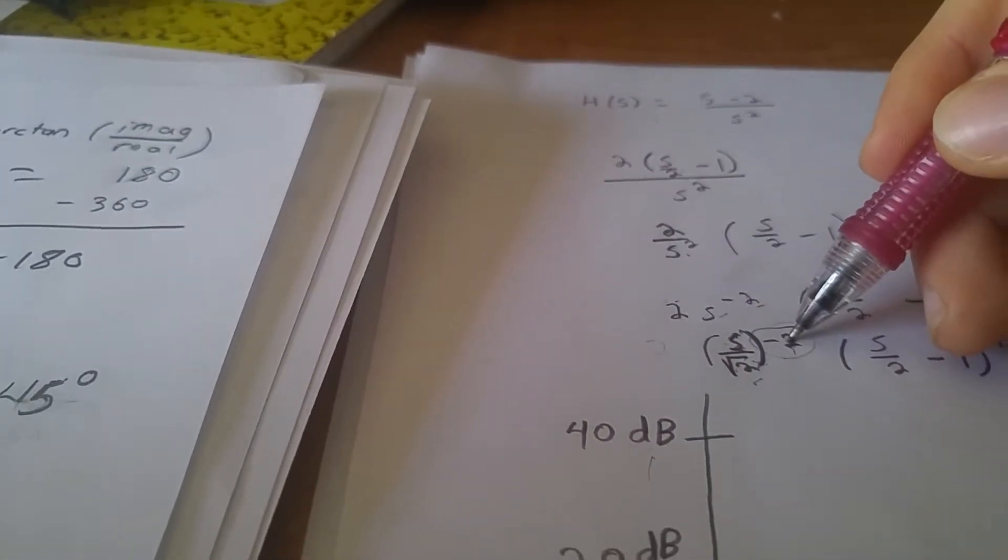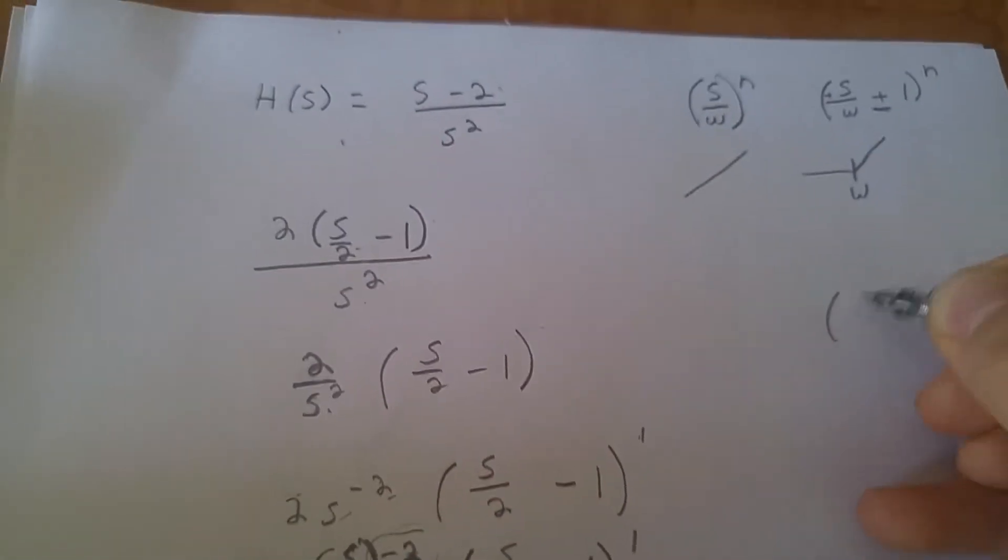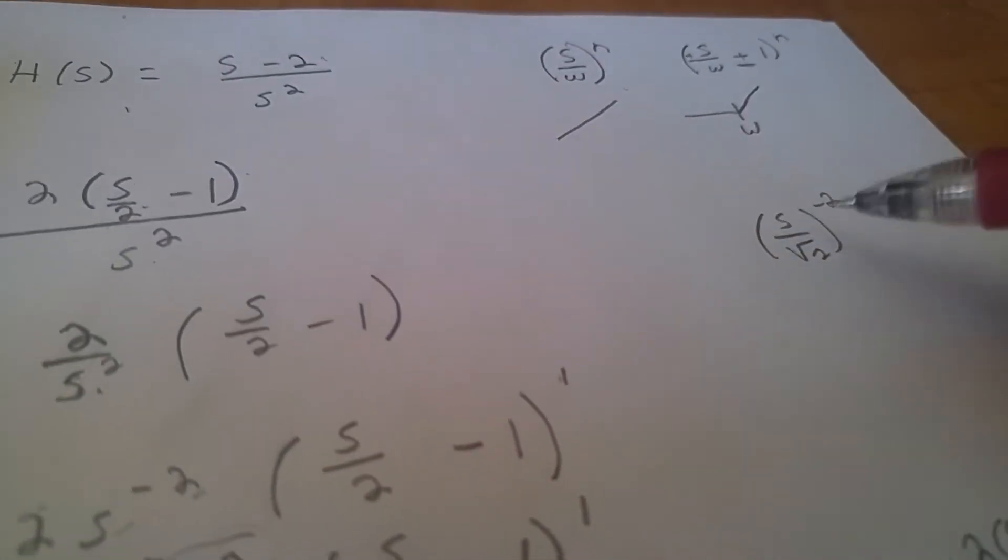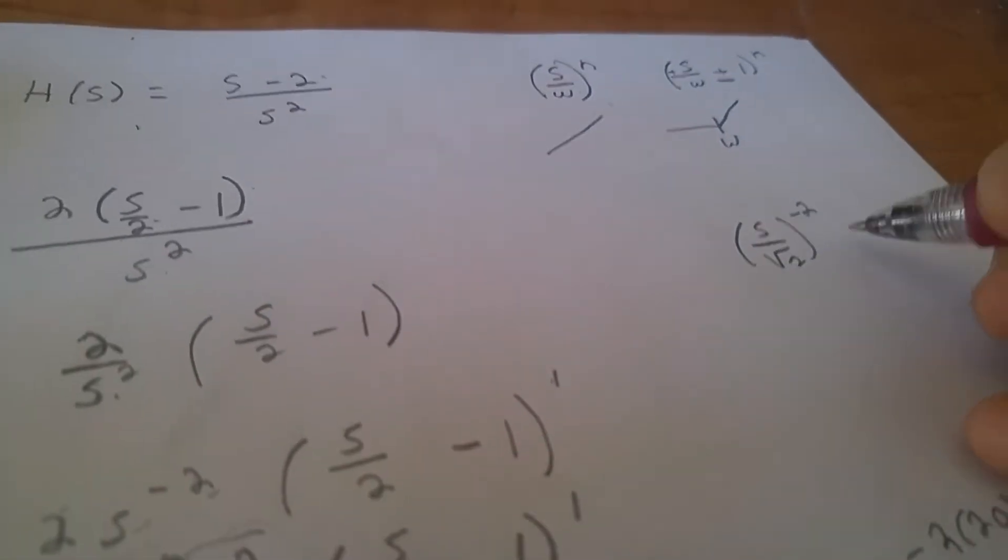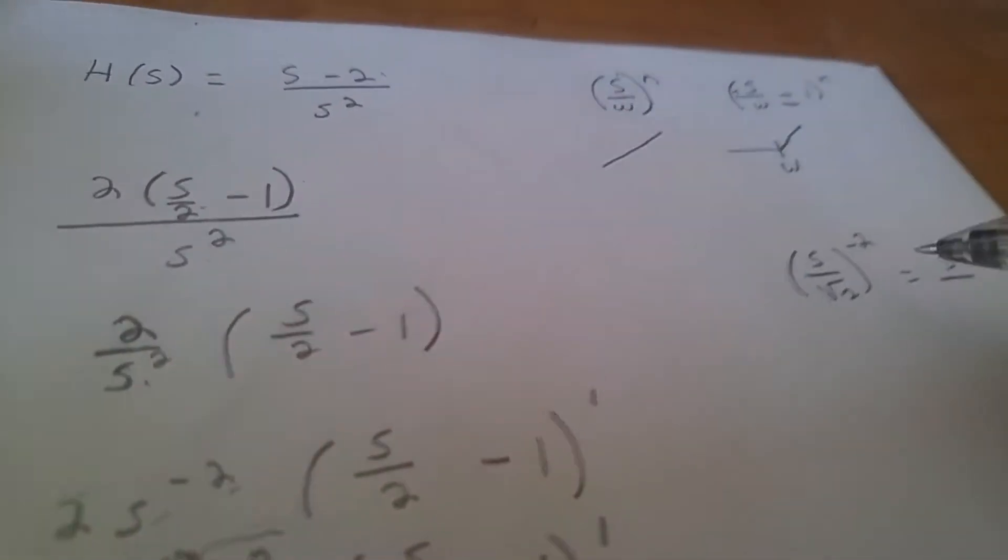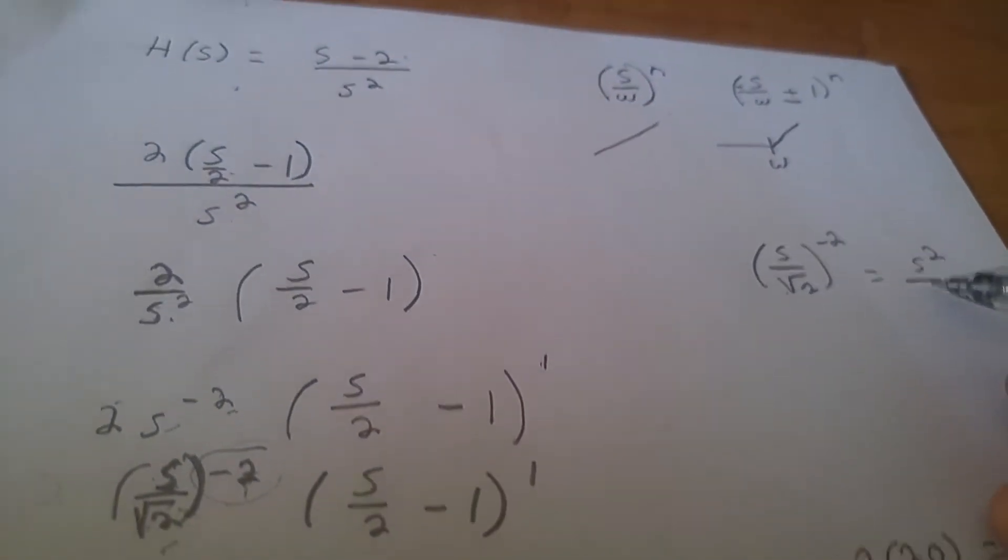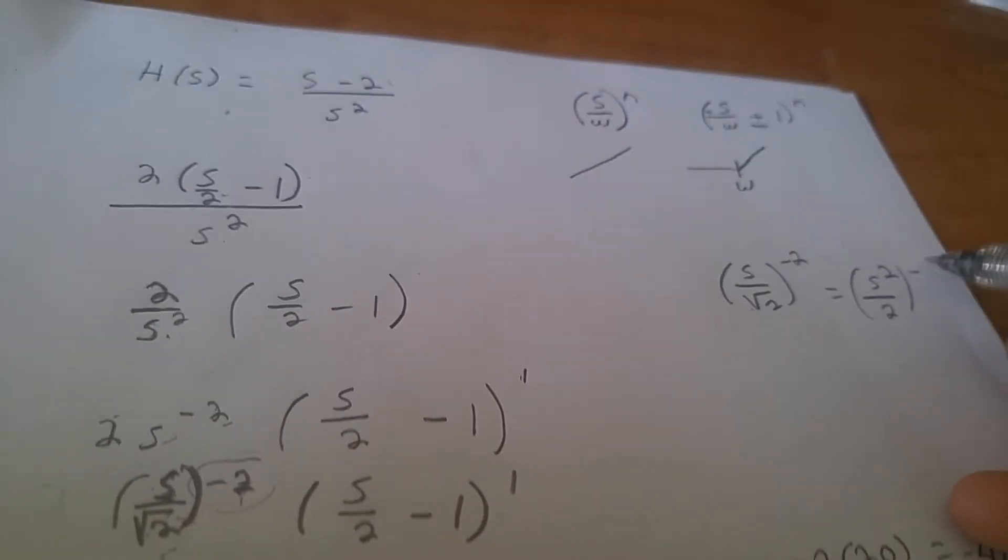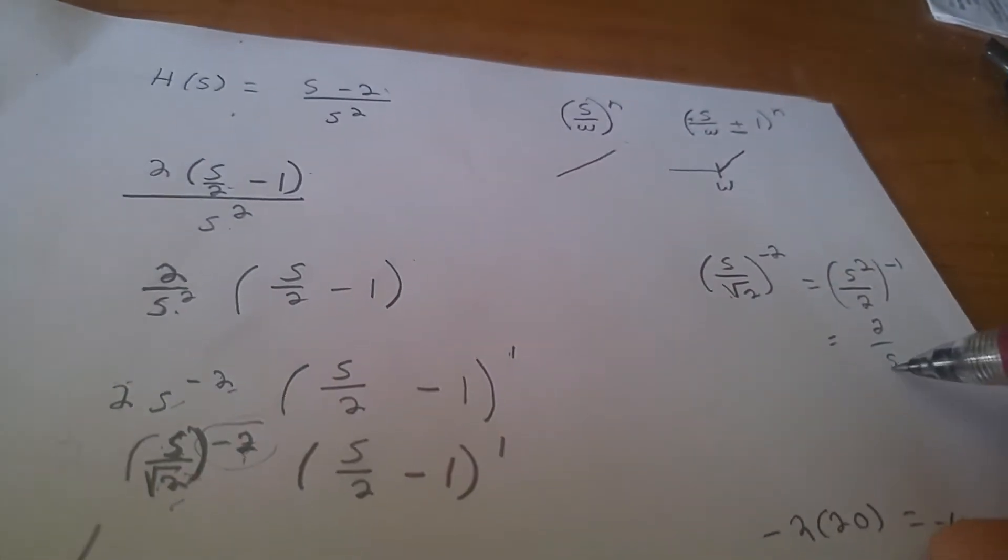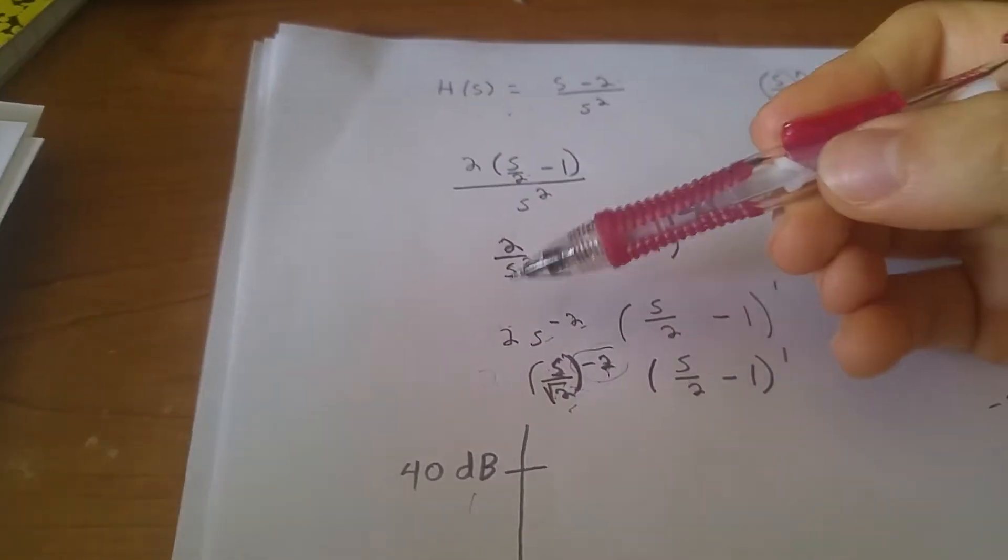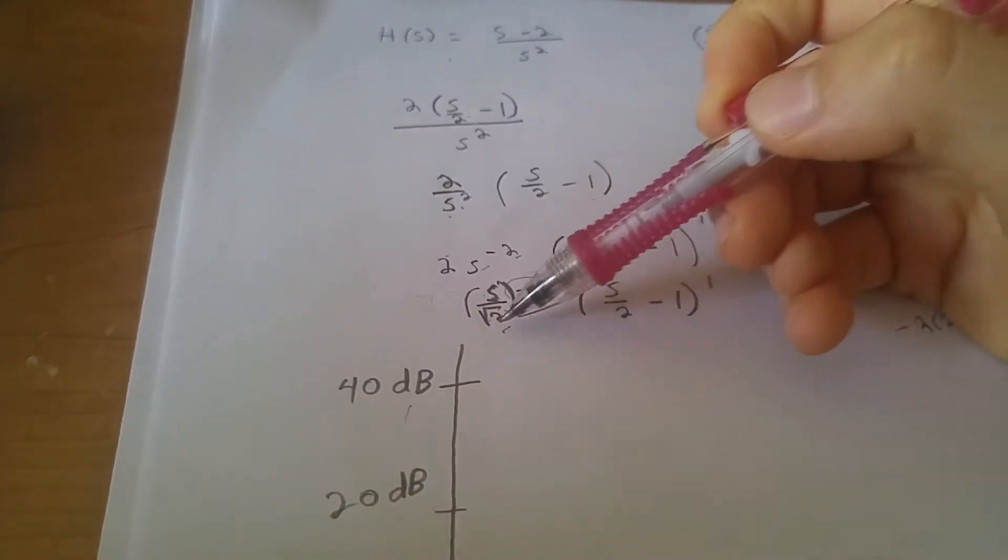Why does this work? You're probably like, what did you just do? Well, I'll prove to you real quick why that works. If we have s over square root of 2 to the negative 2, then I know that that is going to have to be the same as this multiplied by itself twice, which is going to be s squared, and what's square root of 2 squared? Well, it's just 2. So, that's going to be s squared over 2 to the negative 1, which is just 2 over s squared, which is what we already had here. So, it's the factoring at the constant, like I mentioned.